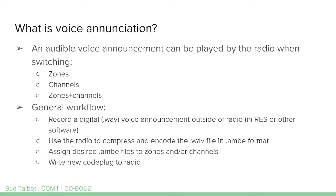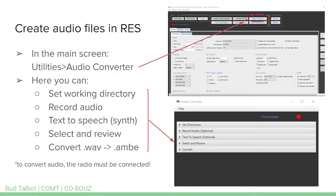First, we need to create those audio files. Here I'll talk about how to do it in RES. You could do part of this work outside of RES, but you'll need to do the AMBE encoding back in RES. When you're on the main screen, go to Utilities > Audio Converter. This pops up the Audio Converter dialog, where you'll do most of your work. You can set a working directory to store files on your hard drive. You can record natural voice audio in RES or use text-to-speech — a basic voice synth. The audio files from the intro video used that text-to-speech option. You can select and review files, and finally convert them from WAV format to AMBE format.